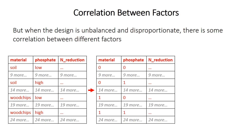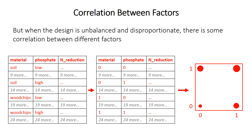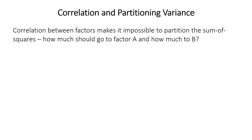Converting to zero and one again, if we have only 10 data points in the soil/low-phosphate category, 15 in soil/high-phosphate, 20 in wood chips/low-phosphate, and 25 in wood chips/high-phosphate, there's some correlation. For example, if we know the material is soil, we also know it's more likely that phosphate will be high. The correlation between factors means it's impossible to accurately partition the sum of squares, because knowing whether something is wood chips or soil tells us information about the other factor — they're intertwined and can't be fully distinguished.